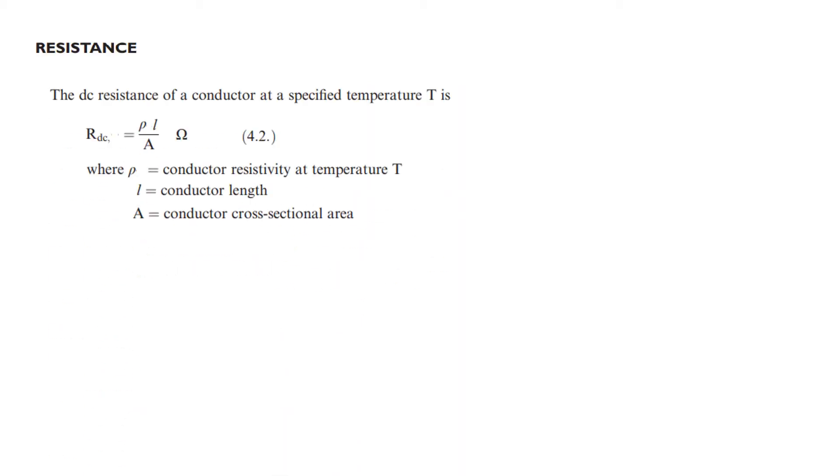Now resistance, there are two types of resistance defined. One is called the DC resistance of a conductor at a specified temperature, given by this formula: R_dc = ρl/A, where ρ is the conductivity, l is length, and A is the conductor cross-sectional area. The AC resistance is given by R_ac = P_loss / I_rms^2. We will be primarily dealing with the DC resistance here.